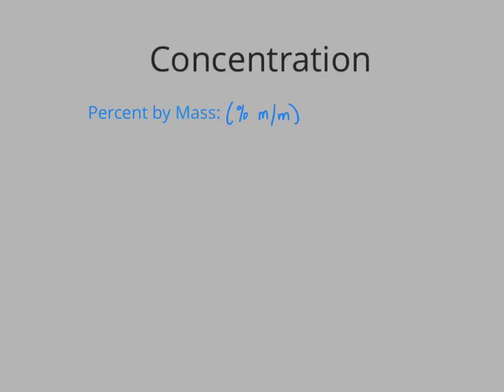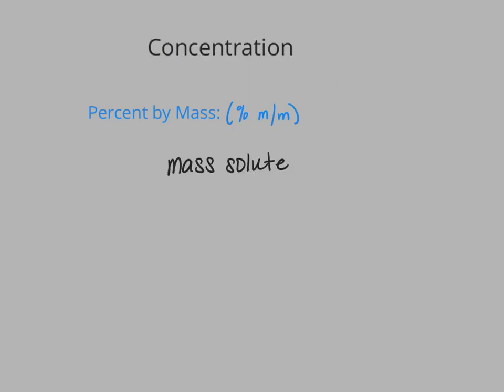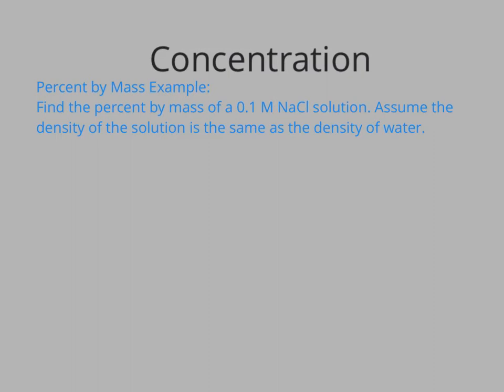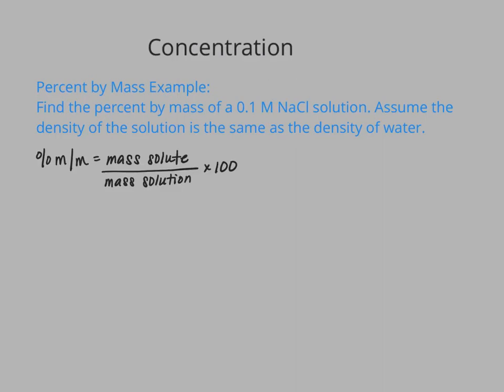We can also calculate the concentration of a solute in percent form using mass — using percent by mass. Our percent by mass is simply the mass of our solute over the mass of our solution times 100. It's exactly the same as our percent by volume, but instead of using volume as our measurement, we're using mass. Now let's take a look at an example for how to calculate percent by mass. The question is: find the percent by mass of a 0.1 molar sodium chloride solution. Assume the density of the solution is the same as the density of water. Our percent by mass is our mass of solute over our mass of solution times 100, so I need to find both of those values.